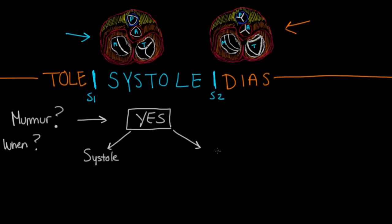I want to give you this logical algorithm to figure out what's going on in a patient with a murmur. The first question you want to ask yourself is, is there a murmur? If the answer is yes, then we move on with more questions. If there is a murmur, the next question is when does that murmur occur? We need to get more specific. Is it in systole or is it in diastole?